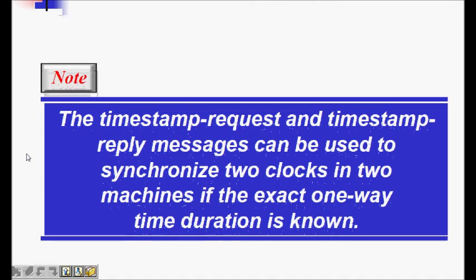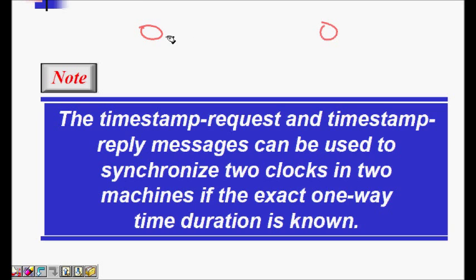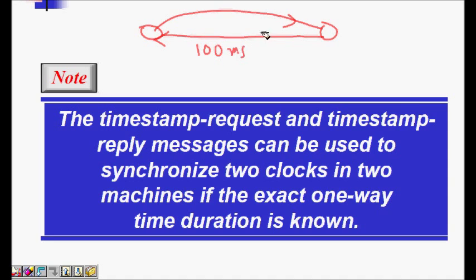Timestamp request and reply messages can also be used to synchronize two clocks in two machines if the exact one-way transit time duration is known. If I know the propagation delay — say 100 milliseconds — and the other machine says it is exactly one o'clock, then when the message arrives I know it is now one o'clock plus 100 milliseconds. Even if clocks are not synchronized, you can still find the round trip time.